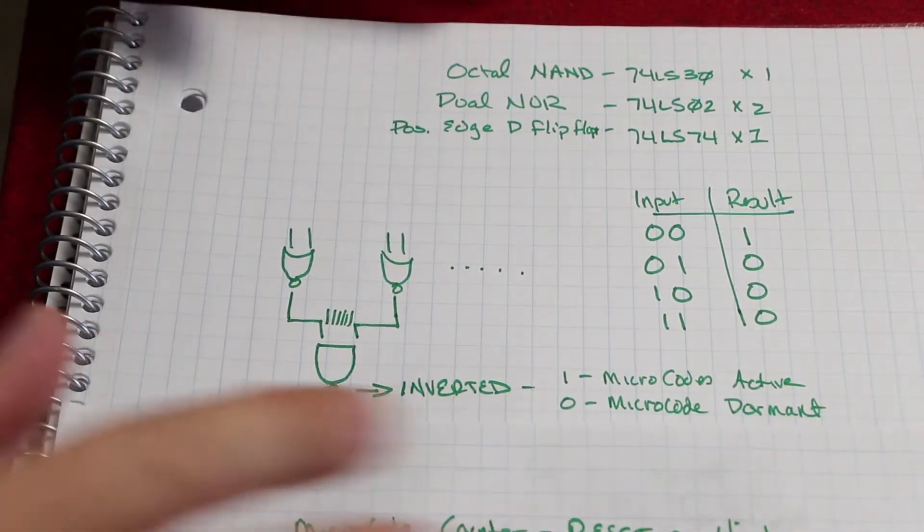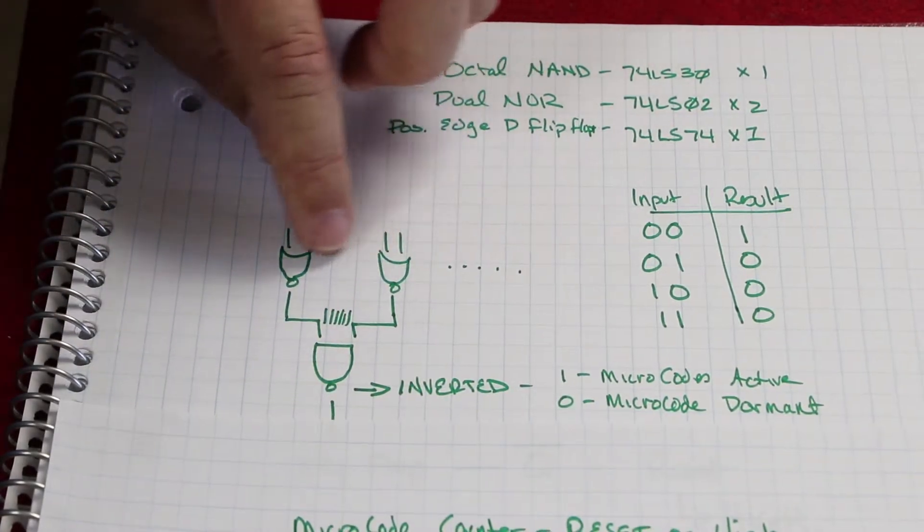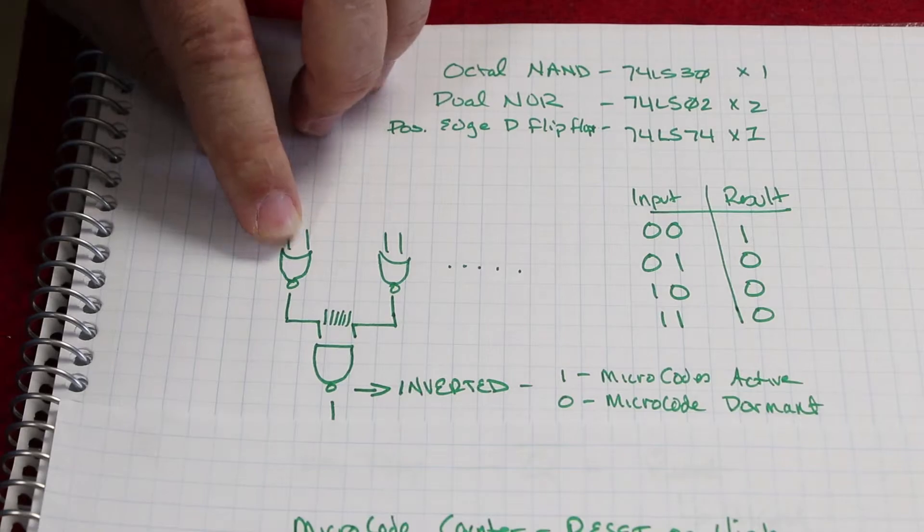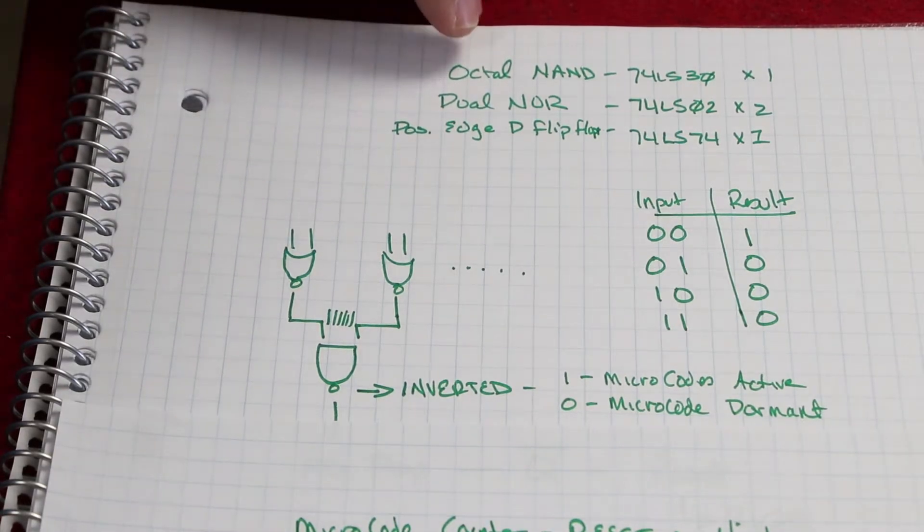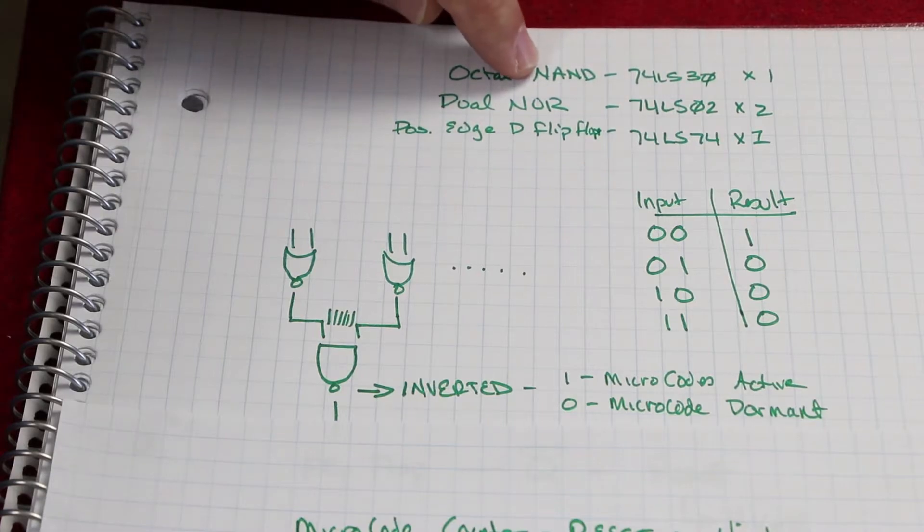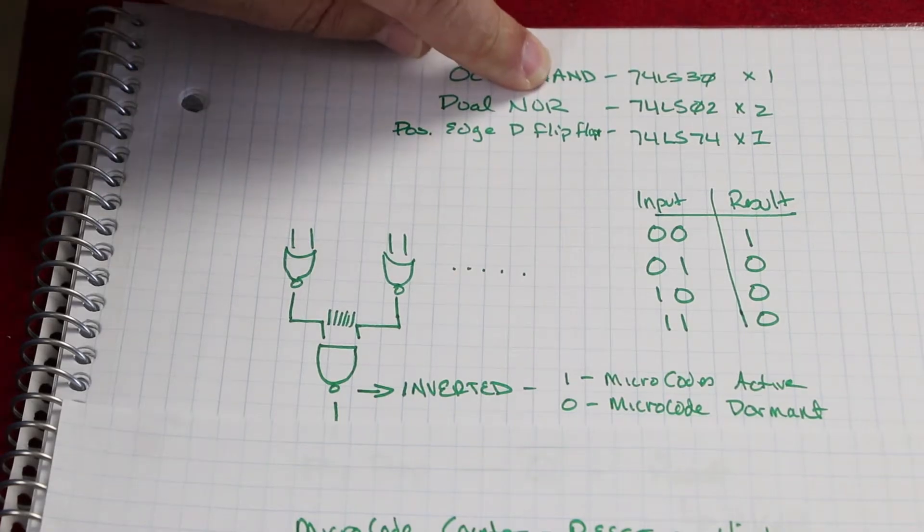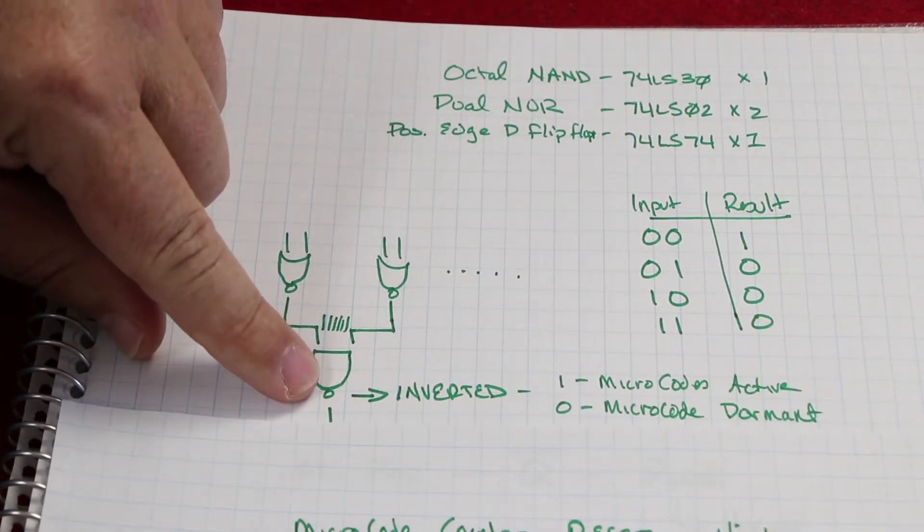Then what I'm going to do is pull it into an octal NAND, because with the 16 NOR gates, I have eight outputs, and it happens that in the kit I have an octal NAND chip, the 74LS30. In this case, I would have liked to have had an octal AND, not a NAND, but I have this.